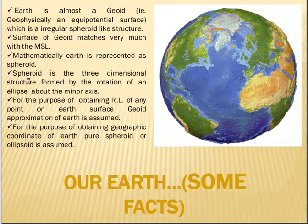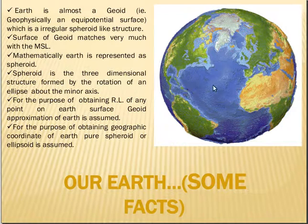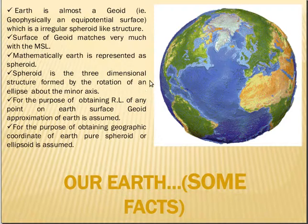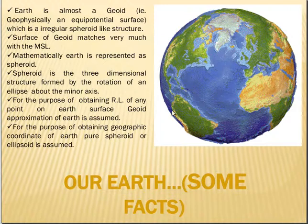We can say the surface developed by the sea water surface is approximately, ideally, a geoid. A geoid is a geophysically equipotential surface, meaning the potential at each and every point on it is the same. Since the density of earth varies from place to place, it does not have a totally spherical structure.